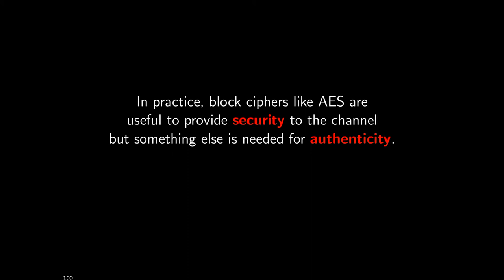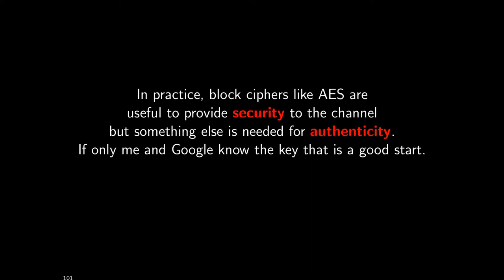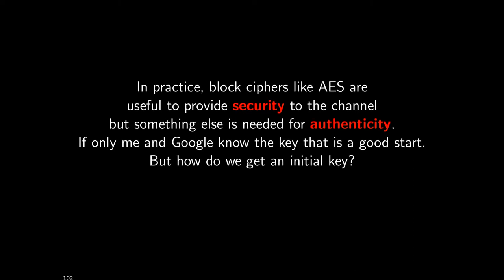In practice, block ciphers like AES are useful to provide security for the channel — they encrypt all the data. But something else is needed for authenticity, because Eve can still replay the same AES encrypted message twice and Alice won't know any better unless we do something else on top of that. To have a shared key — for example, in the Google example, when checking email — having a shared key between only me and the communicating entity is a good start. It allows us to achieve security and authenticity, but we still need to bootstrap the whole process by somehow exchanging the key. How do we get this initial key?